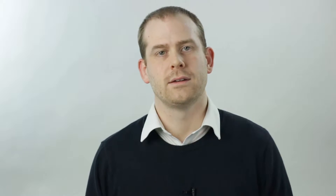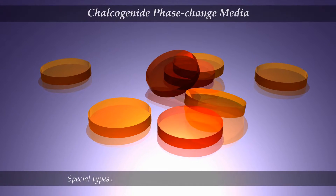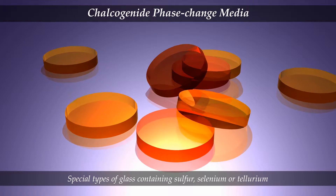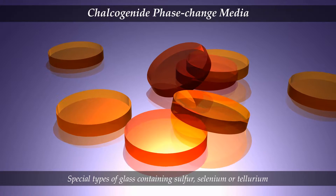I want to present three examples of this using a specific type of active material — a phase change material — that can be switched between two or more states when it is excited by stimuli such as heat, electrical current or light. The phase change materials we are using are called chalcogenide glasses.